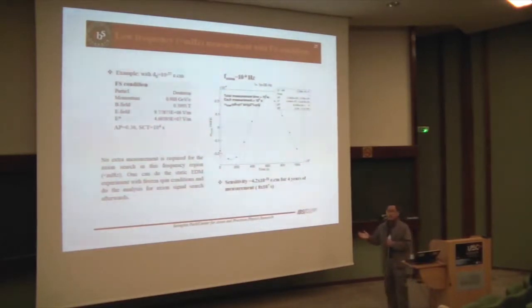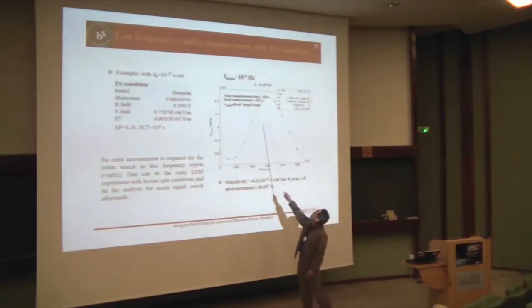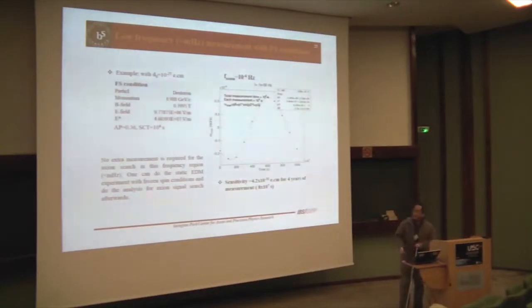So far, I talked about resonance mode search, this is for low frequency search. This is very similar to the deuteron EDM result. If you have very low, for example, one microhertz, you can just measure the EDM using the frozen spin method. Just do the frozen spin method experiment. You don't need any extra measurement for the axion search. You do the EDM experiment. Every time, you measure 10,000 seconds. This is spin coherence time. Just do the static EDM measurement. And then, you arrange all the data and fit with sine function. If there is oscillations, you found the axion.